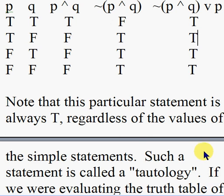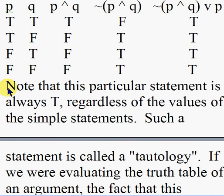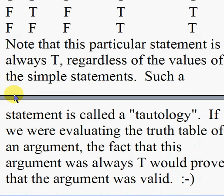Notice that the last column is always true — this is a special situation. A statement that is always true regardless of the values of its simple statements is called a tautology. If we were evaluating the truth table of an argument, the fact that this argument is always true would prove that the argument is valid. Next we'll do the second example.